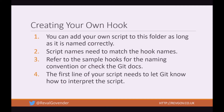You can add your own script to this folder as long as it is named correctly. Script names need to match the hook names — refer to the sample hooks for the naming convention or check the Git docs. The first line of your script needs to let Git know how to interpret the script. A good way of learning how to structure your Git hooks is to take a look at the sample files within the Git hooks folder. There are really some good examples there.